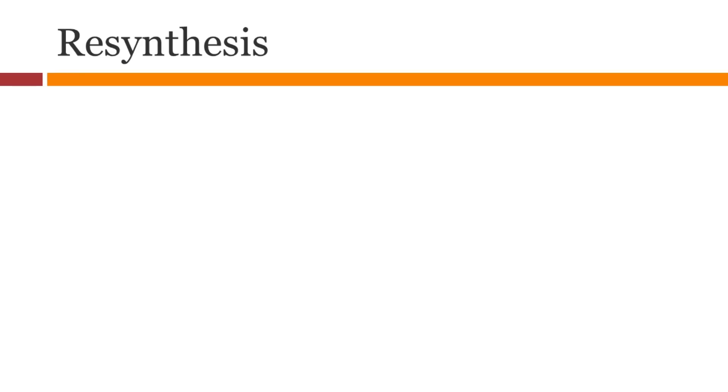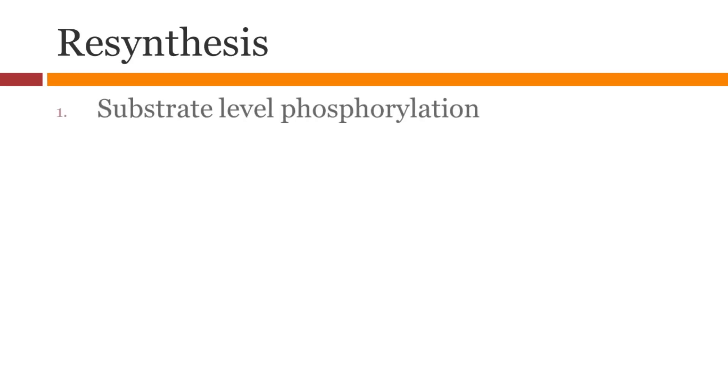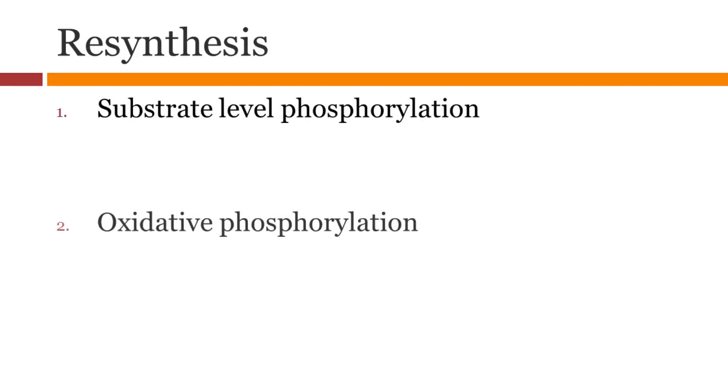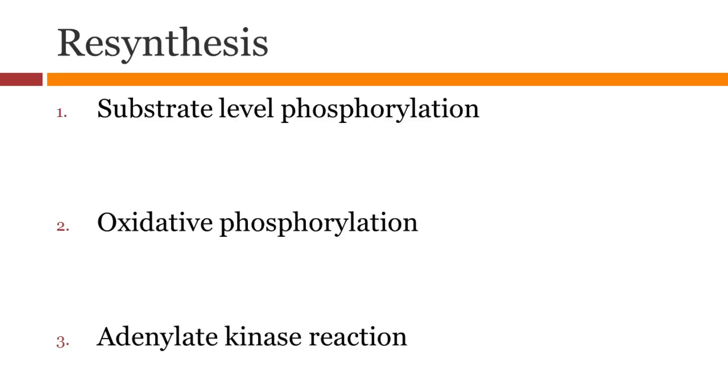The three ways of regenerating ATP in our body are substrate level phosphorylation, oxidative phosphorylation, and adenylate kinase reaction.